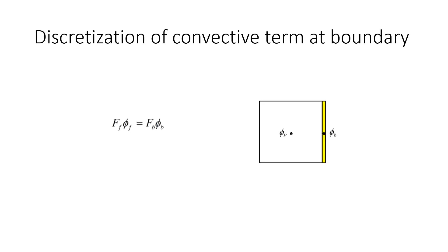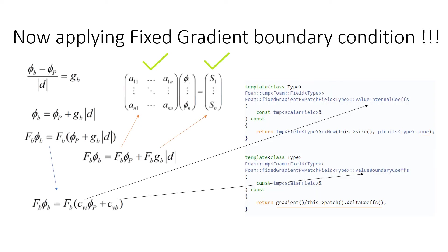Having done the Laplacian term, let us move on to the discretization of the convective term at the boundary. Again we have phi_b and phi_P. The final discretized term is fb times phi_b at the boundary — fb is the flux at the boundary and phi_b is the value of the variable at that boundary. If you want to know how this is derived, go to the zero gradient boundary condition video.